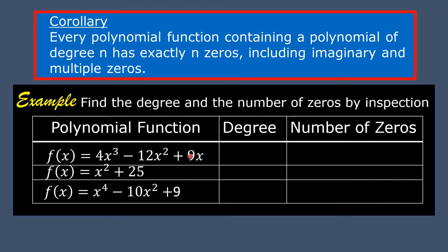Example: find the degree and the number of zeros by inspection. The first polynomial function is f(x) = 4x³ - 12x² + 9x. The exponents of x in each term are 3, 2, and 1 respectively. The highest exponent is 3, so the degree is 3 and the number of zeros is also 3.